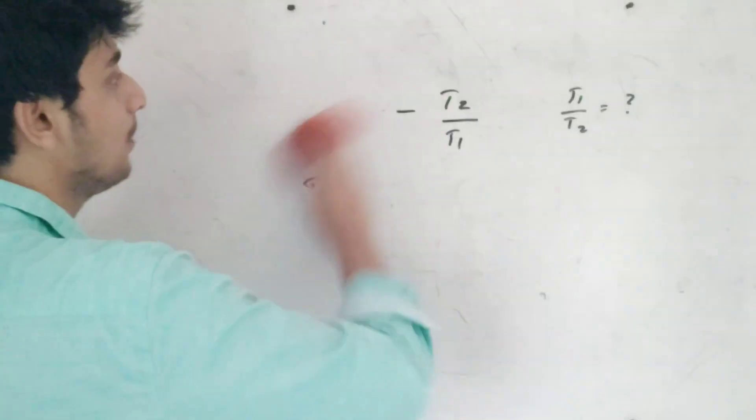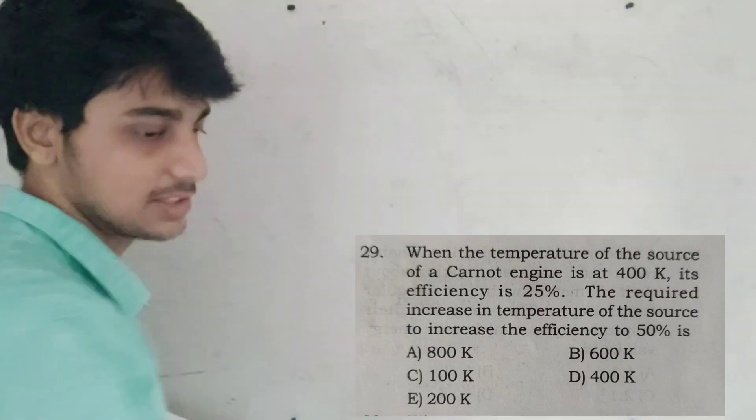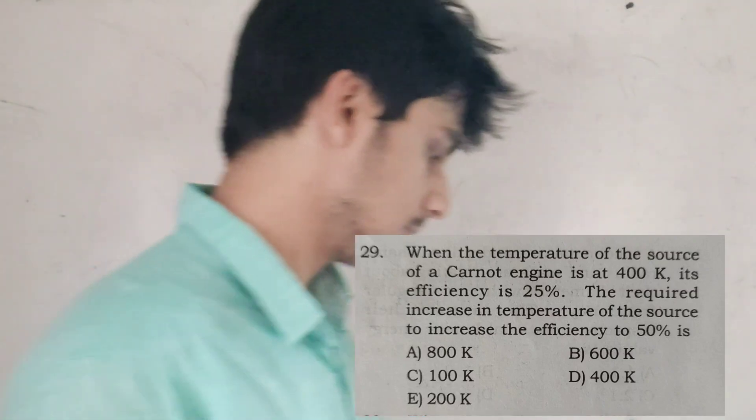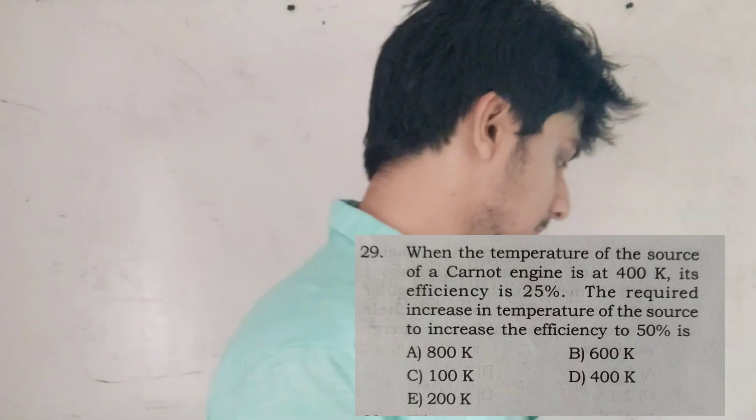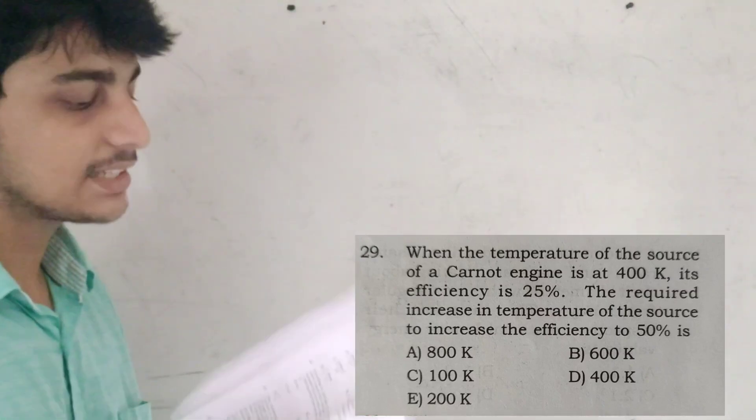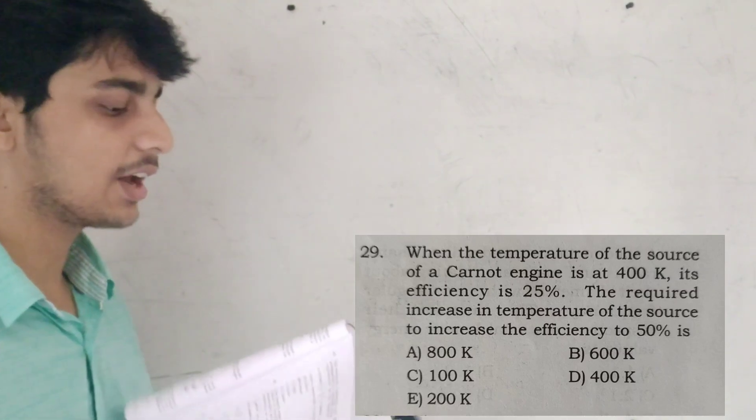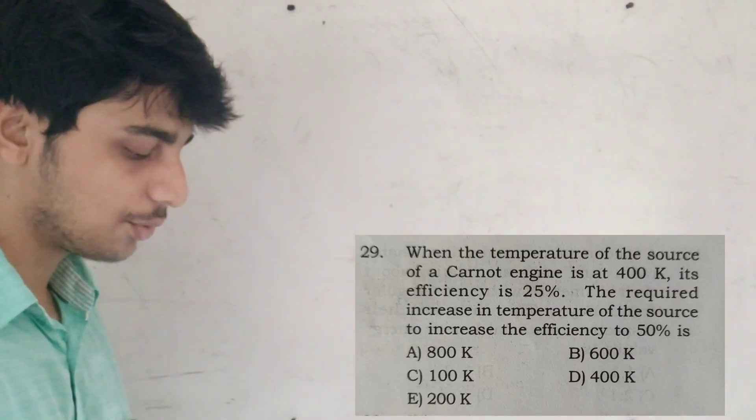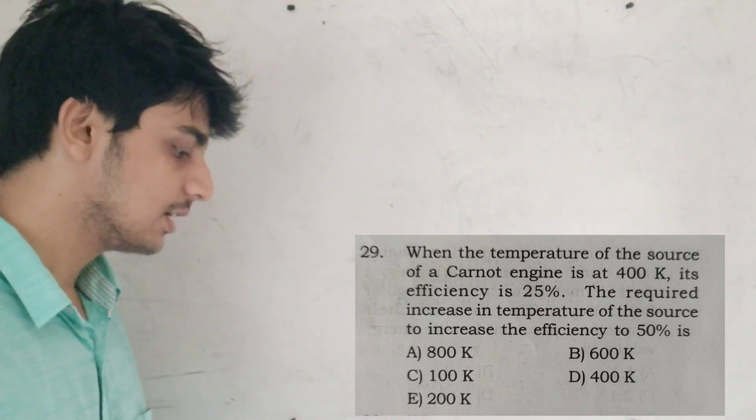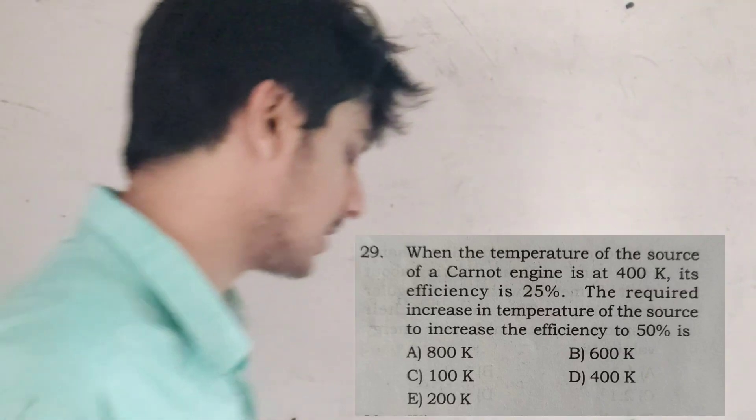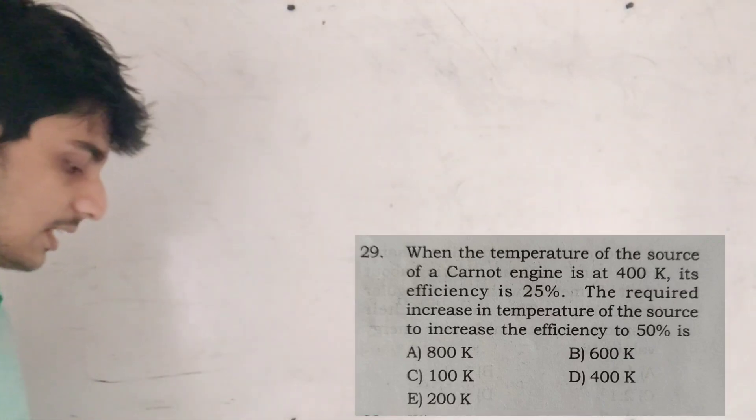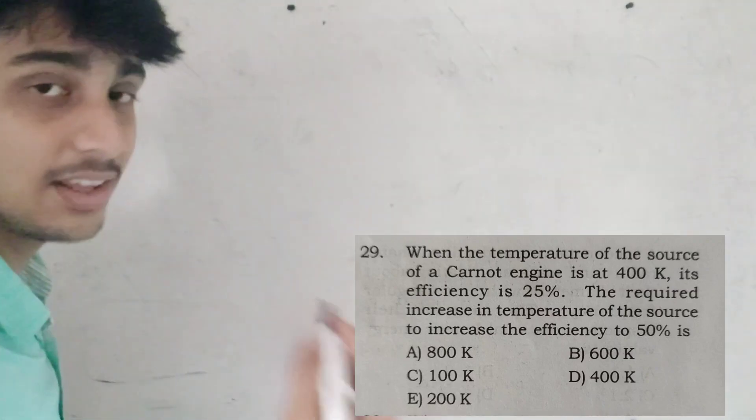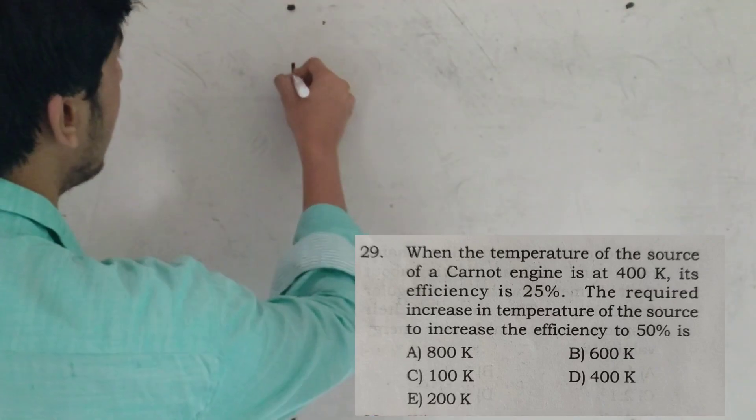Now we are going to write the equation again. When the temperature of the source of the Carnot engine is 400K, efficiency is 25%. Then the required increase in temperature so that the efficiency increases to 50%. In that case, efficiency is 25%, that is 1 by 4.